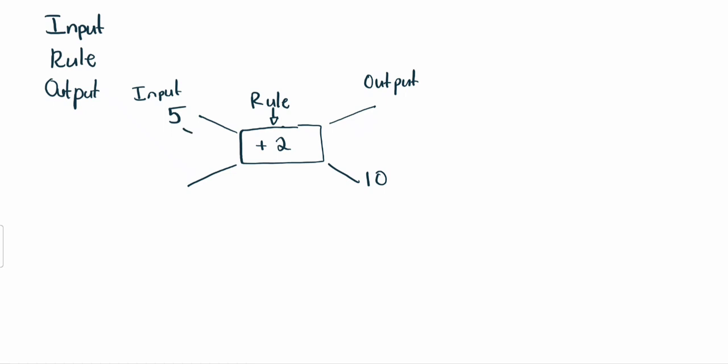For example, since our input is 5, it's going to have to go through our rule, which is plus 2. So 5 plus 2 is equal to 7.